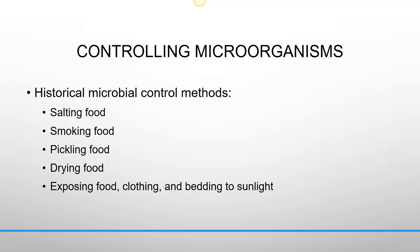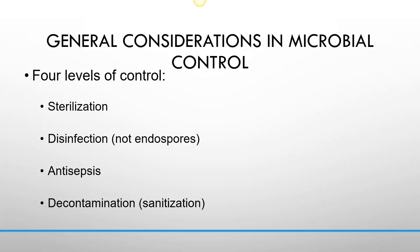There are four main levels of control: sterilization, disinfection, antisepsis, and decontamination or sanitization. Sterilization is the complete elimination of all microorganisms and spores from a surface or inanimate object — it kills everything, even endospores, which resist most things. When we say something is sterile, not even endospores can be on that item. Disinfection is the elimination of most microorganisms on an inanimate object or surface, with the exception of endospores, so with disinfection endospores are still found on the surface.